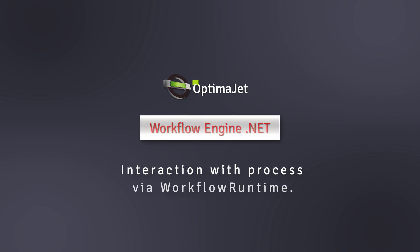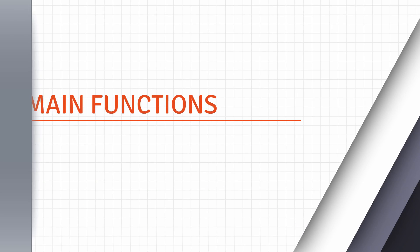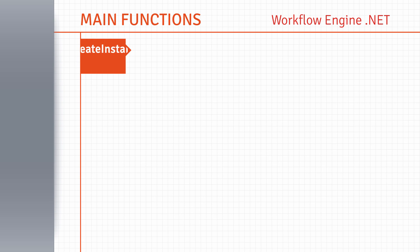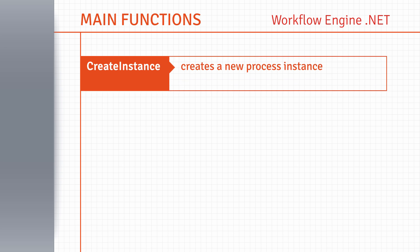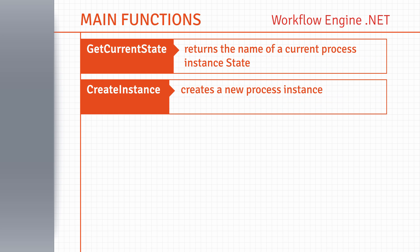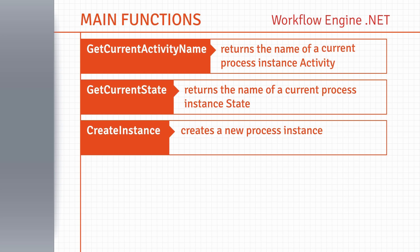Interaction with process via workflow runtime. To interact with a process instance, a few main functions of workflow runtime are used. CreateInstance creates a new process instance. GetCurrentState returns the name of a current process instance state. GetCurrentActivityName returns the name of a current process instance activity.